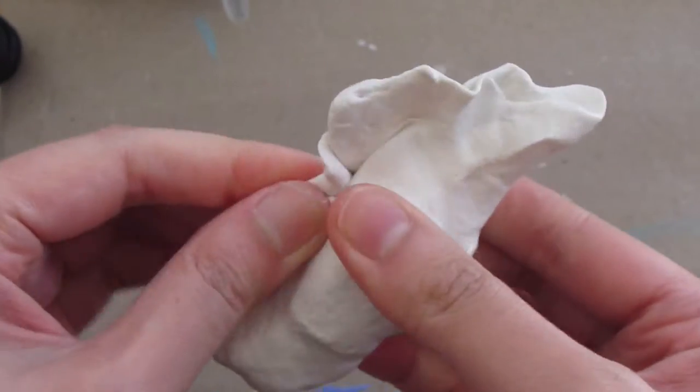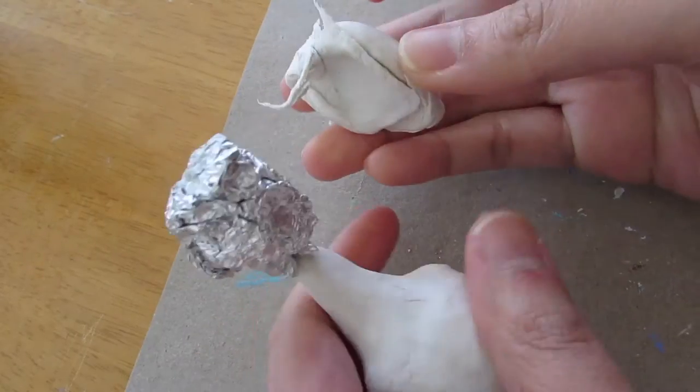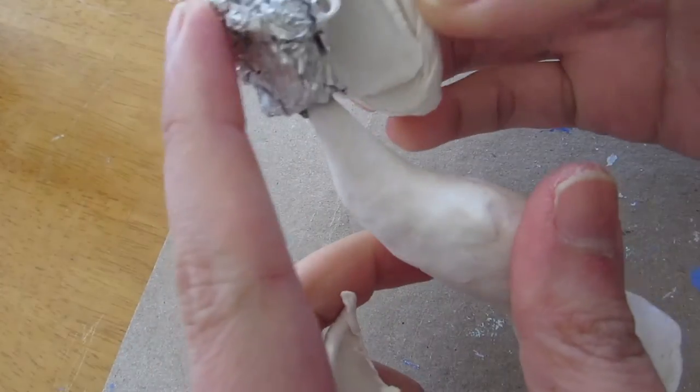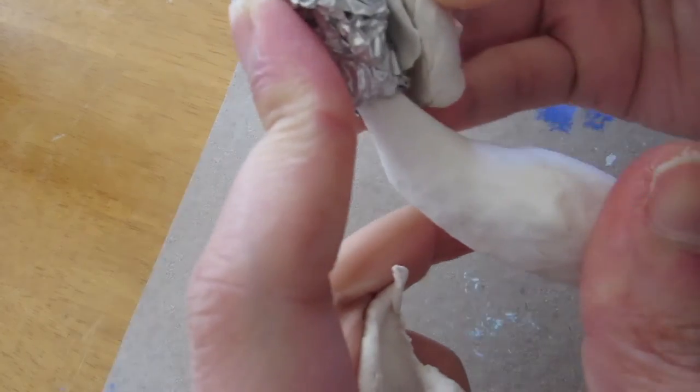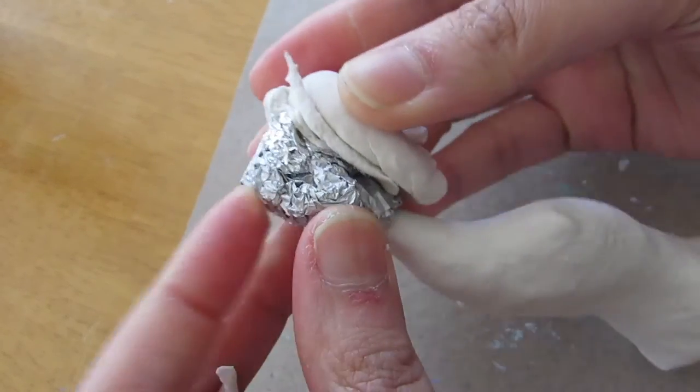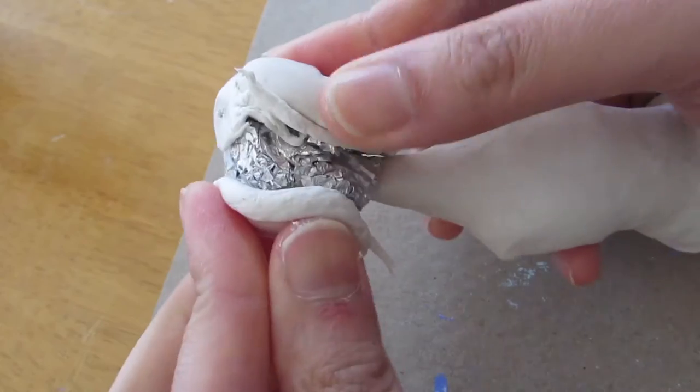I usually sculpt in layers so I wait for the body and the face to dry before adding more clay to it. And as you can see here, I've added more armature for the head so that it's not so heavy.